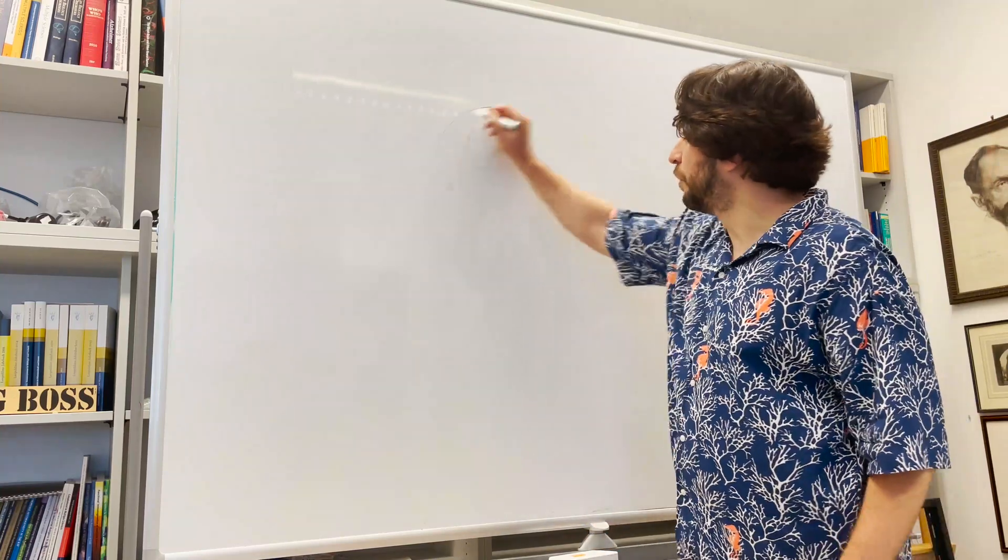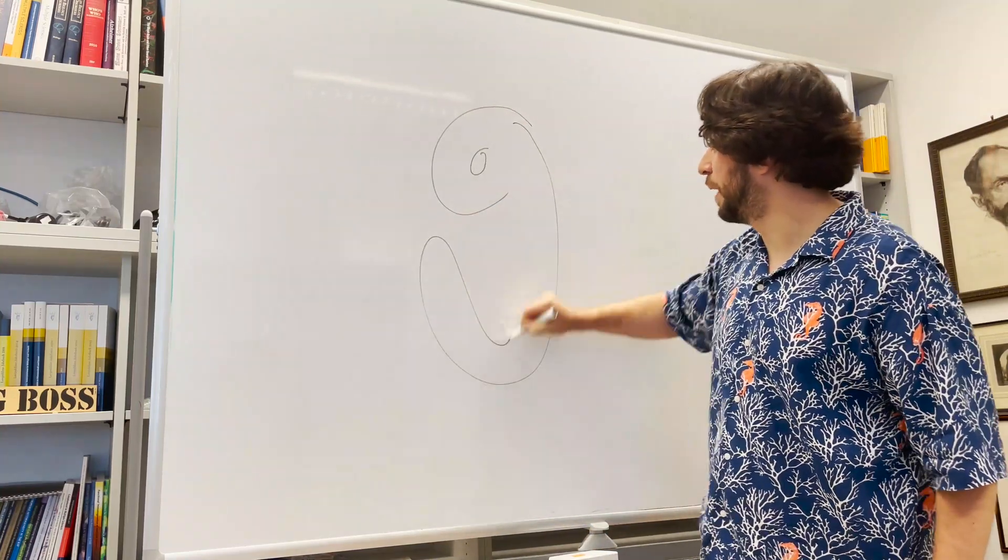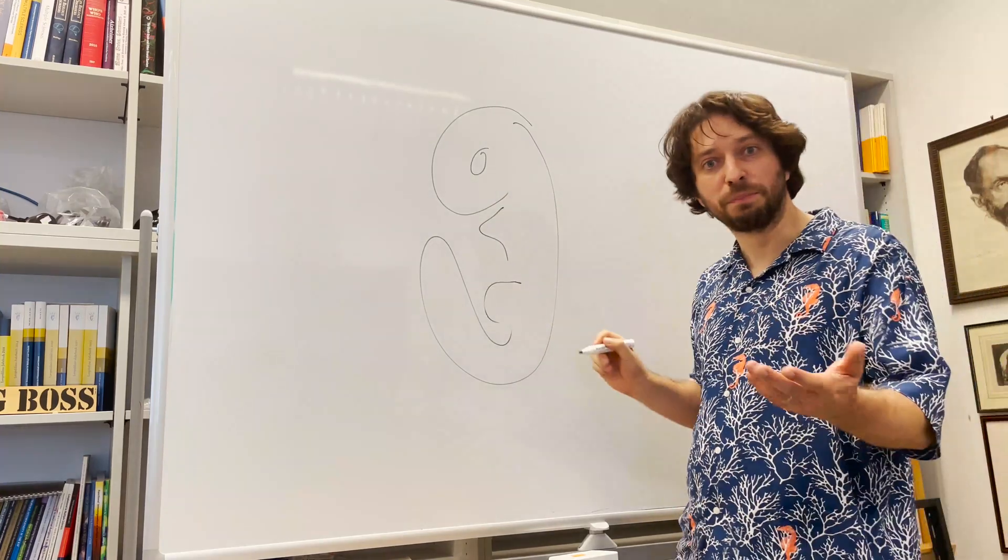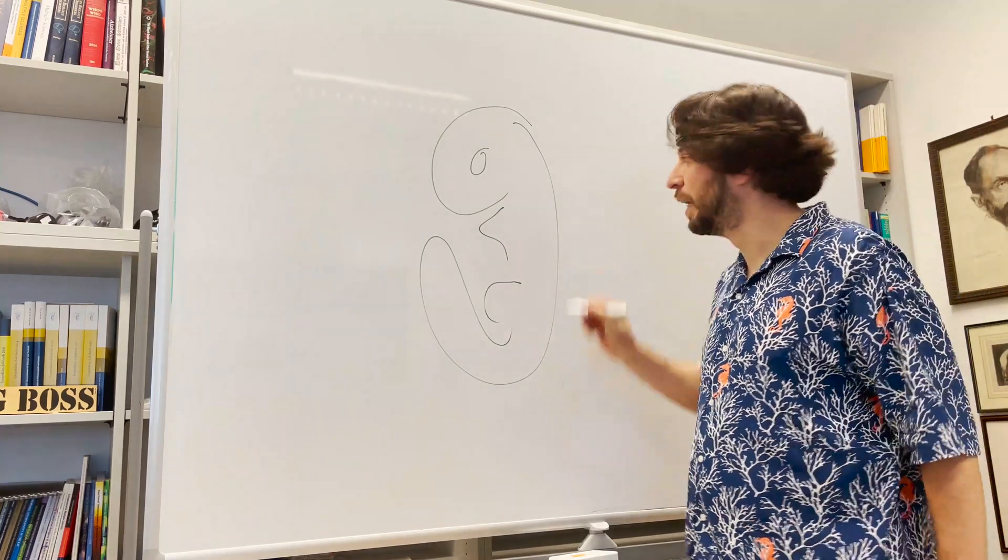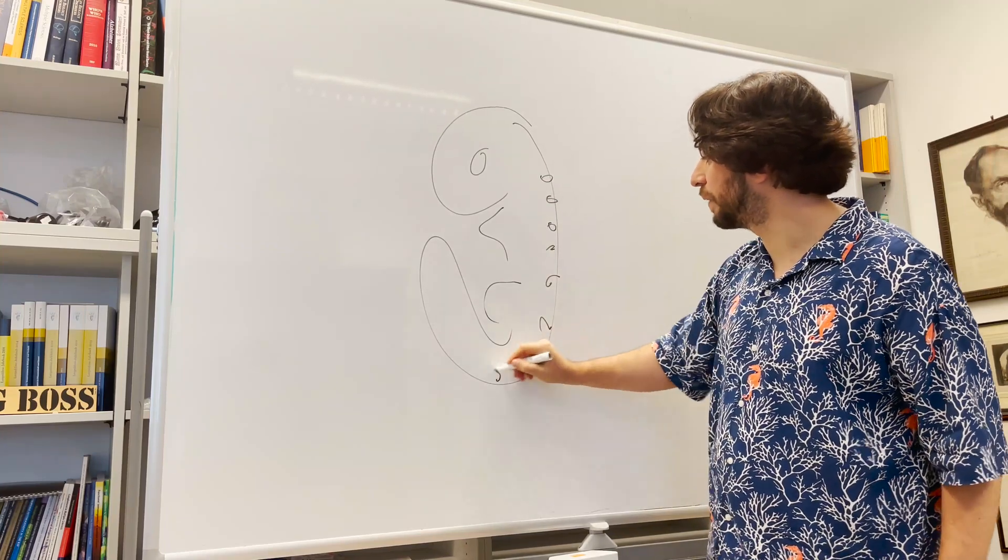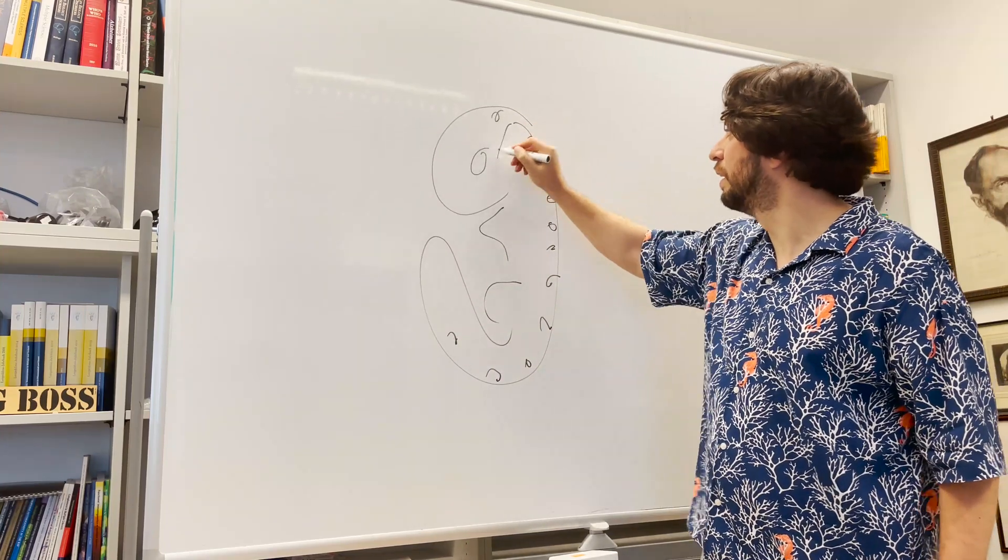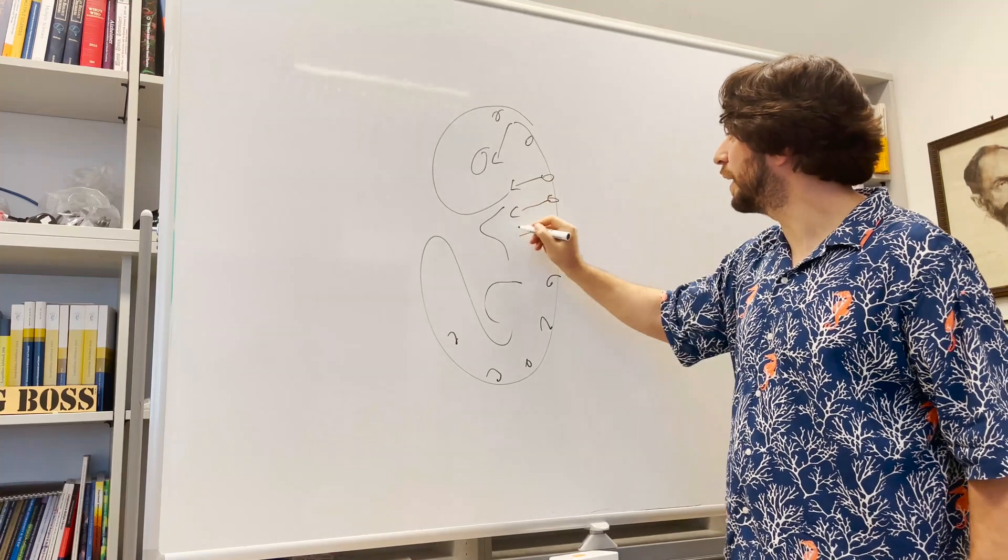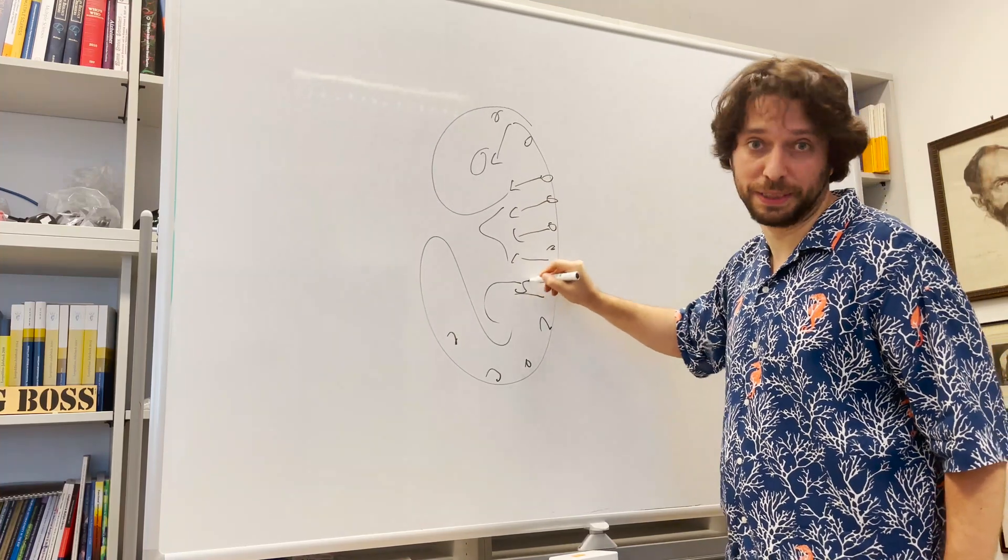As you know, in a vertebrate embryonic body there are specific multipotent cells called neural crest cells. They are born at the dorsal neural tube area and they will migrate everywhere in the body, and they will give rise to many different cell types because they are multipotent.